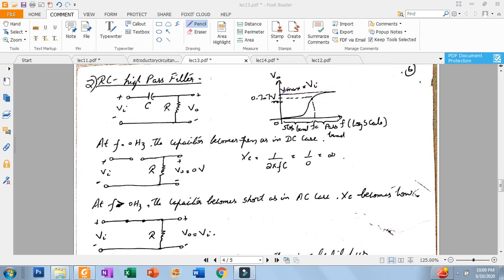At low frequencies, the output voltage is equal to zero volts. The critical frequency is greater than zero volts. V maximum equals Vi. The input voltage is equal to V maximum.